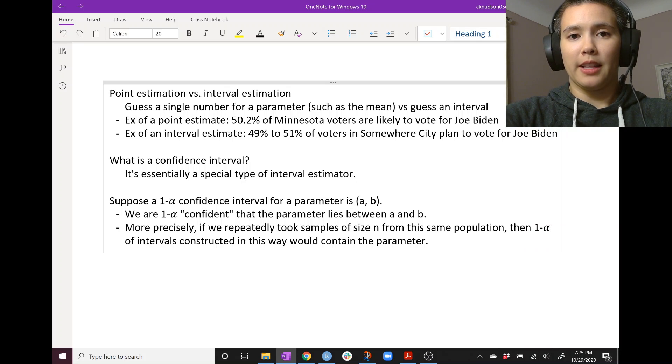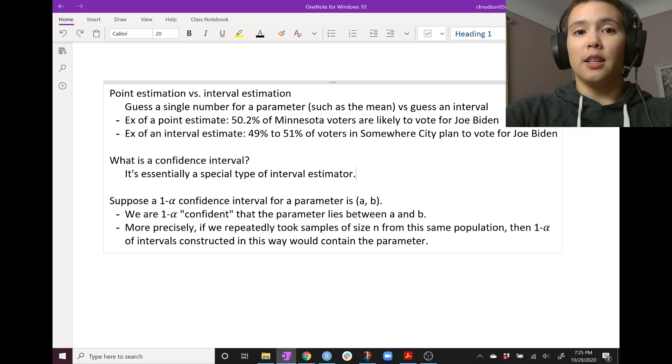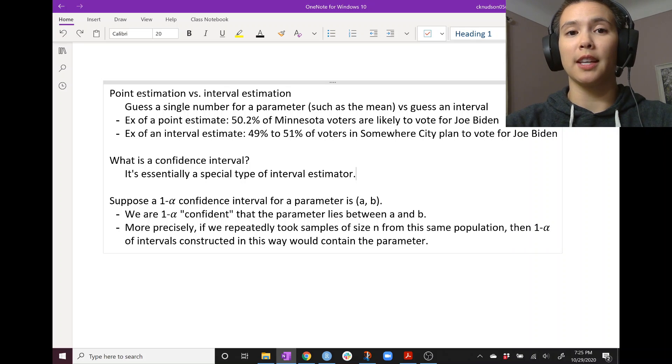Okay, let's think a little bit more about what this confidence interval thing means. These confidence intervals are constructed in such a way that if we repeatedly constructed these confidence intervals, in other words, if we repeatedly took samples from the population of size N and used the techniques that we'll talk about later to create our confidence intervals, then about 1-alpha, or perhaps 95%, of intervals constructed with this technique would contain the true parameter value.